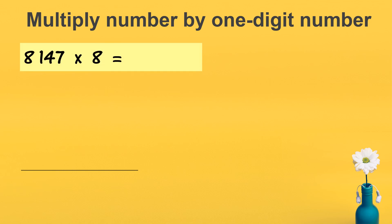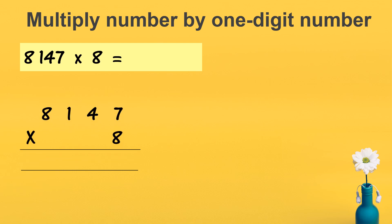Let's look at the next question: 8,147 times 8. I want to show you the vertical form first — bentuk lazim. You write it like this. I start from the one's place: 8 times 7 is 56. I write 6 here and 5 on top — 5 regroups to the tens place.